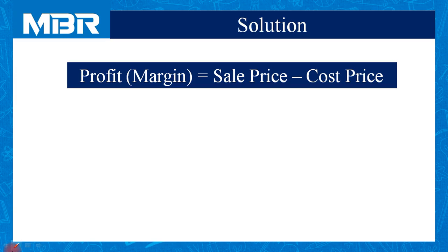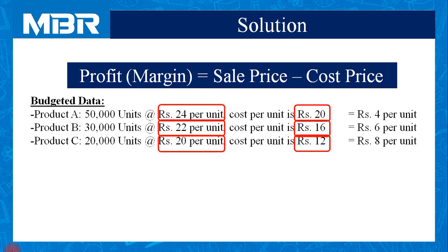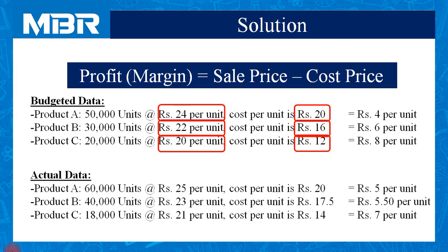The examiner has given information of sale price for products A, B and C, as well as for actual data for products A, B and C. Let us calculate the profit figure for budgeted data. Sale price for product A is Rs. 24 per unit, cost price is Rs. 20 per unit, so profit is Rs. 4 per unit. For product B, sale price is Rs. 22 per unit, cost price is Rs. 16 per unit, so 22 minus 16 equals Rs. 6 per unit.